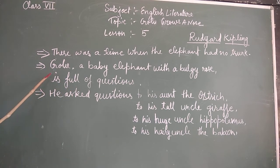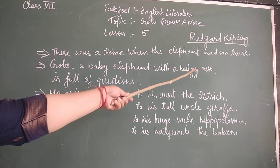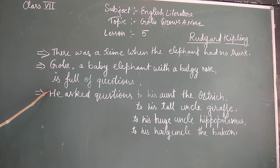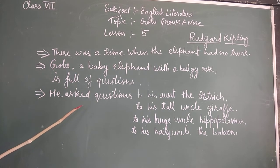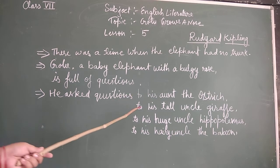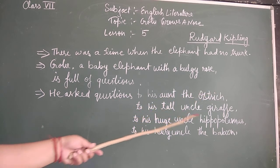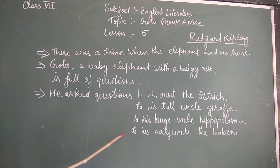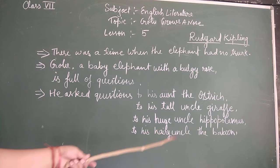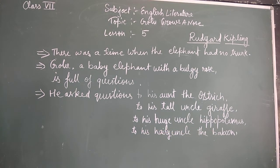There was a baby elephant named Guru. A baby elephant with a bulky nose, full of questions. He used to ask many questions. He asked his tall aunt the ostrich one question, his tall uncle the giraffe one question, his huge uncle the hippopotamus one question, his hairy uncle the baboon one question. Now let's see what those questions were.